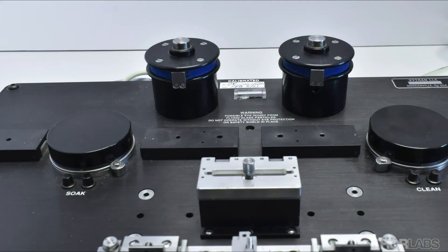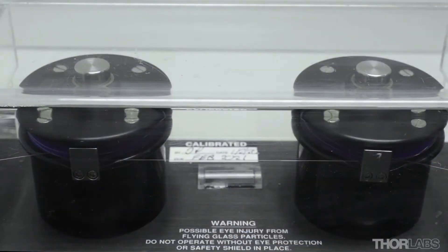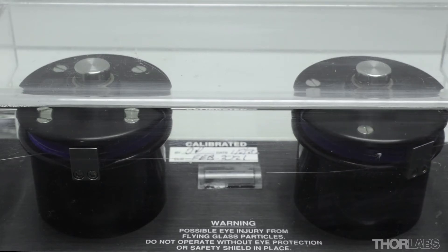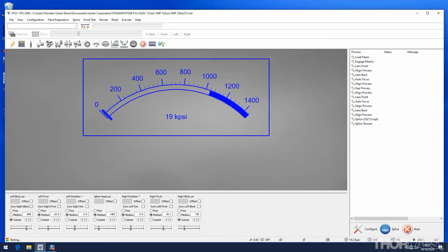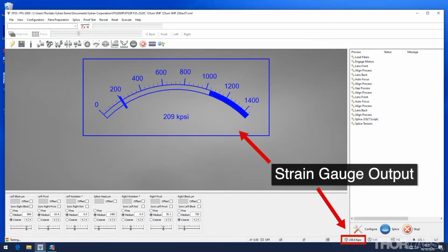The proof tester consists of two mandrels onto which the fibre is wound. The left mandrel remains stationary. The right mandrel rotates and applies an increasing load to the fibre which is measured by a strain gauge. The applied force is reported to the software.